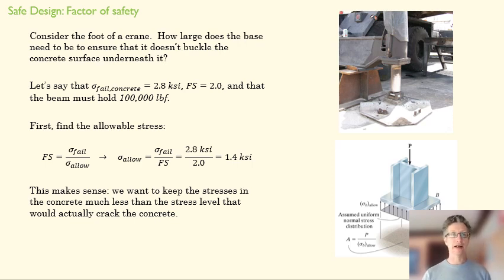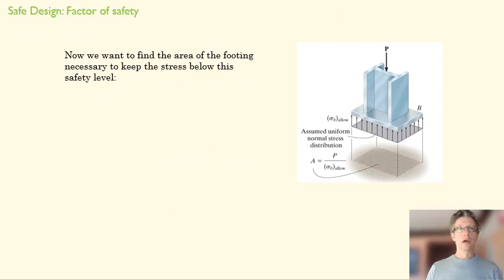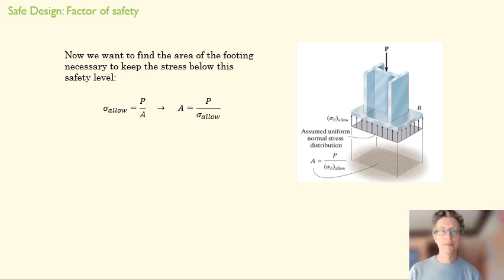Now let's go ahead and solve the design problem, which is to find the area of the footing necessary to keep our compressive stress there below our safety level. So we take our average normal stress equation, and we want to find A because now we know this. We know the max that is allowable, and we know that this is 100,000 pounds of force, and so we're going to solve this for A.